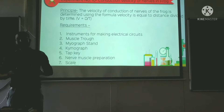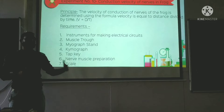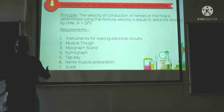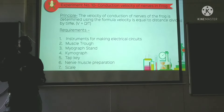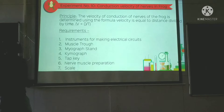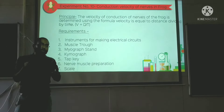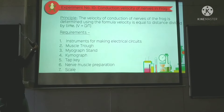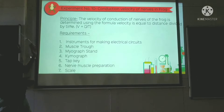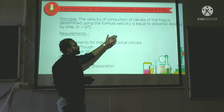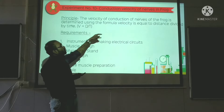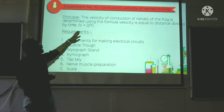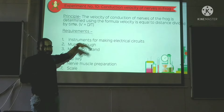We'll be discussing the conduction velocity. The nerve conduction velocity is an important property — if someone has a degenerated nerve, we go for the NCV test, the nerve conduction velocity test. The principle here is that the velocity of conduction of the nerve of the frog is determined using the formula: velocity equals distance divided by time.